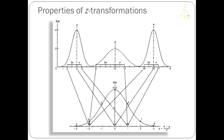Here's a slide we saw before. There are three different distributions that have different means and different standard deviations. When converted to Z-scores, they all have the same mean and the same standard deviation. That allows us to compare these three different distributions in one step by looking at Z-scores.